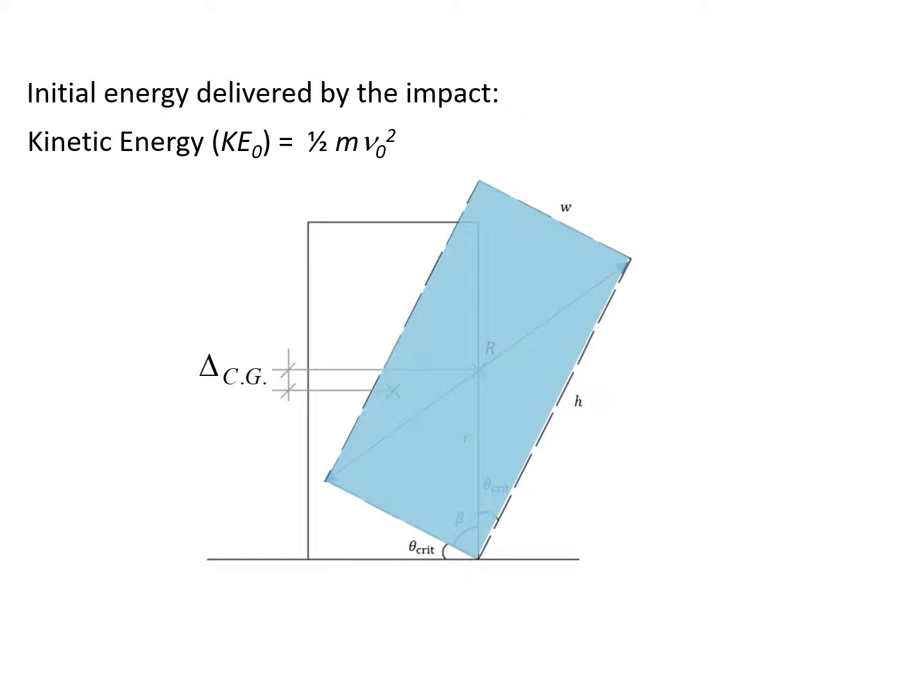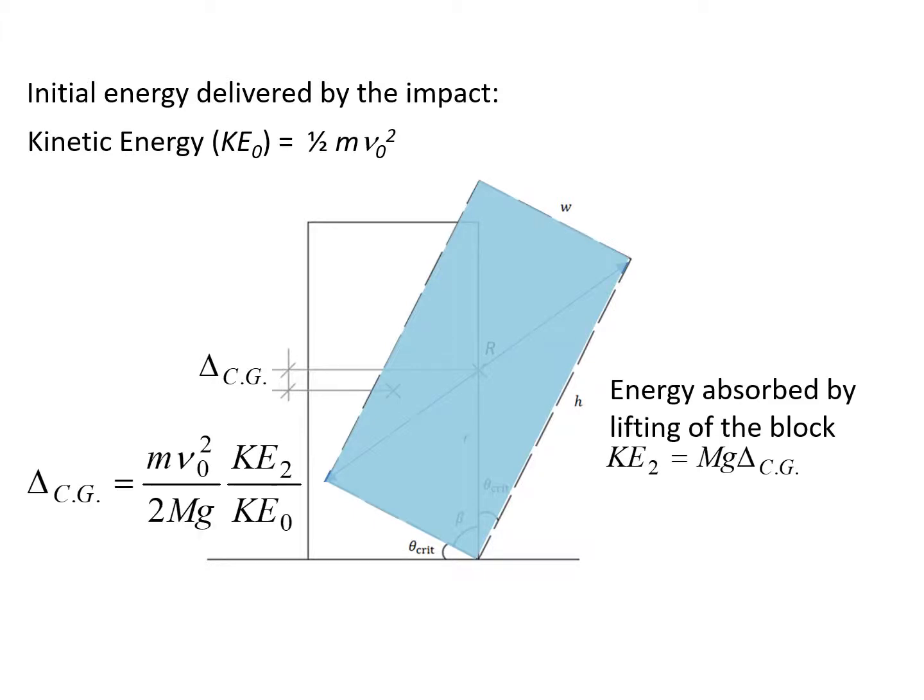A pendulum device has been used to strike the upper corner of the rectangular block, delivering a kinetic energy of half m v0 squared. As the rectangular block is struck, the center of gravity is lifted as the body rotates in the overturning motion. Then a fraction of the kinetic energy is absorbed in the form of the rise in potential energy resulted from the lifting of the block.